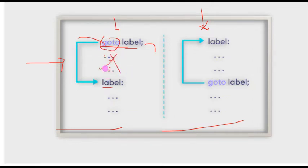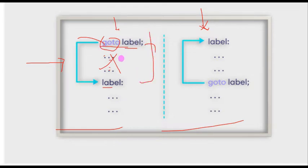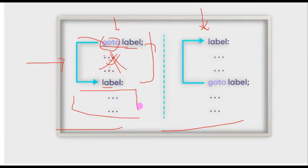These are the forward goto implementation. When you use this forward instruction, the statement in between is ignored because this goto label automatically jumps from here to here rather than executing that statement.